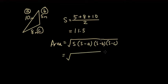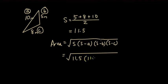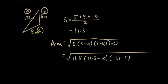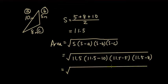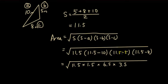Under the square root, put 11.5 — the number you got from adding the three sides and dividing by two — times 11.5 minus each of the sides. So: 11.5 minus 10 is 1.5, times 11.5 minus 5 is 6.5, times 11.5 minus 8 is 3.5. Do the intermediate calculations first before typing into the calculator, so you have: square root of 11.5 times 1.5 times 6.5 times 3.5.